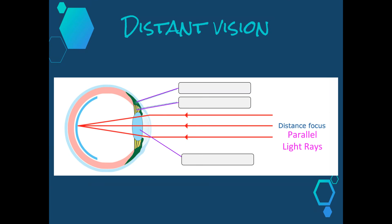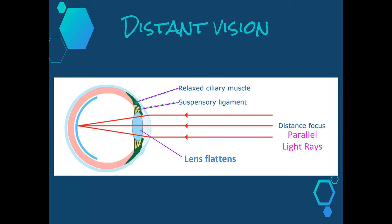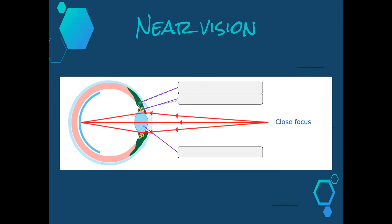So here we can see again, having a look. We've got our parallel light rays from our distant object. Our ciliary muscles are relaxed. Our suspensory ligaments are therefore taut and our lens remains flattened. With close focus, we have our light rays that diverge. The muscles are contracted, so they're tight. That causes the suspensory ligaments to slacken and our lens to become rounder.